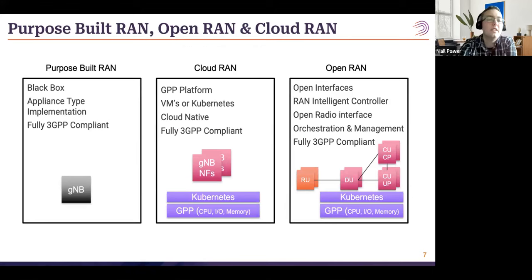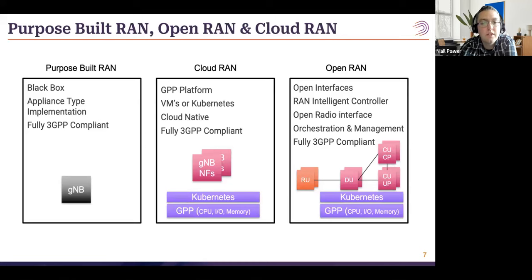There are different solutions available in the ecosystem today, all following 3GPP specifications but implemented differently. On the left is purpose-built RAN — essentially a black box where the operator purchases hardware, software, and the solution together as a whole from a single vendor. In the middle is cloud RAN, which virtualizes network functions like the DU and CU in a virtualized or cloud-native environment, potentially with different hardware vendors, RAN software vendors, and different OS and Kubernetes layers.